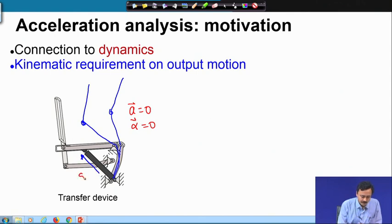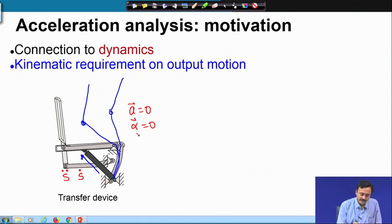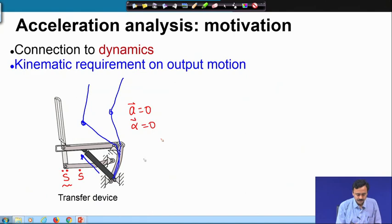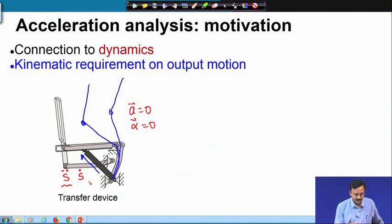The restriction comes from the acceleration of the actuator. If I want acceleration at the output to be zero, there must be some definite acceleration at the input. If I want some non-zero acceleration at the output, I have to decide what should be the acceleration at the input so that it produces, for example, a constant acceleration. Therefore, we need to understand the acceleration input-output relation for this transfer device.